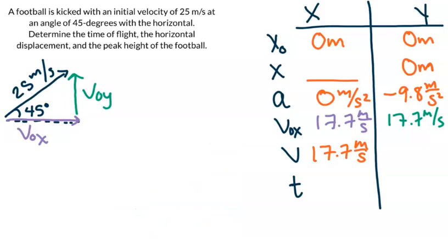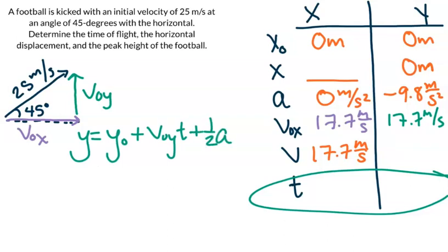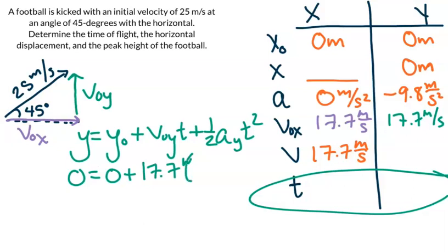We are solving for our time, and we know that time is dependent on our y information. So we can go ahead and look at all the information in the y direction and see if we have enough — and we do. We're going to use our long equation: y equals y-initial plus initial y velocity times time plus one half a-y t squared. Both of our positions are going to be zero, which is nice. Our initial y velocity is 17.7 meters per second, multiplied by t, and then we have one half times negative 9.8 times t squared.